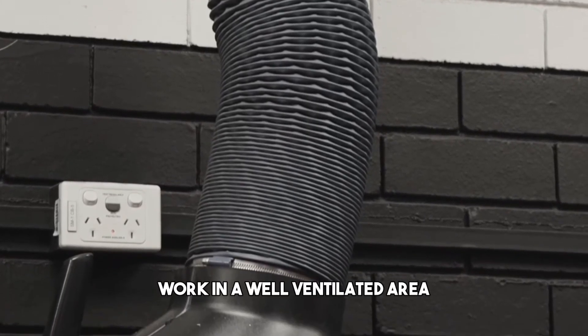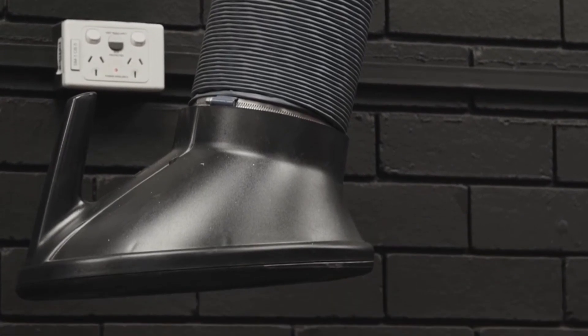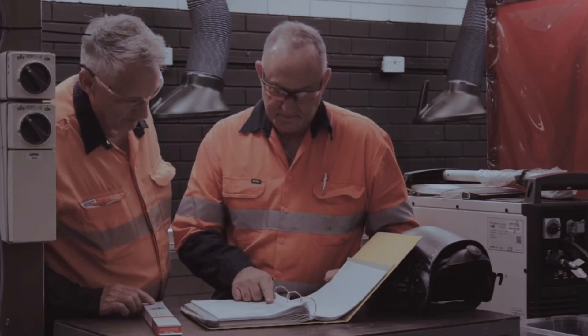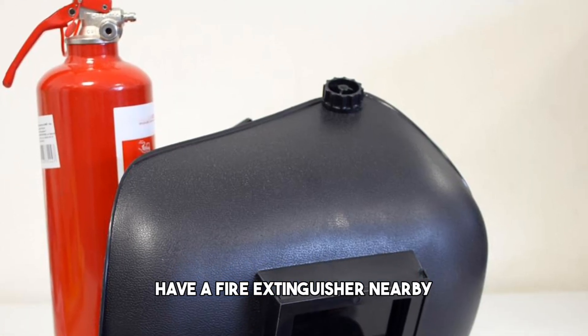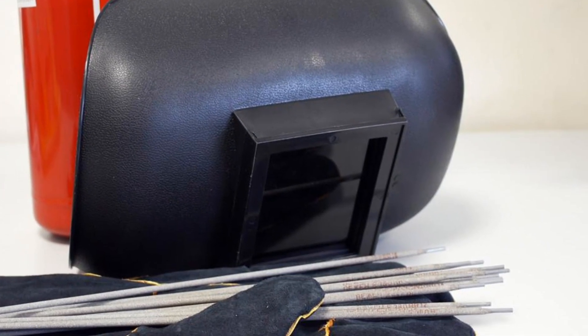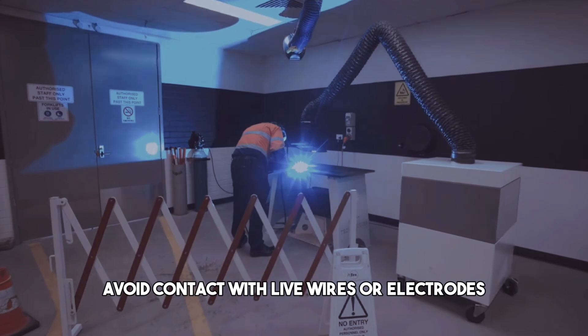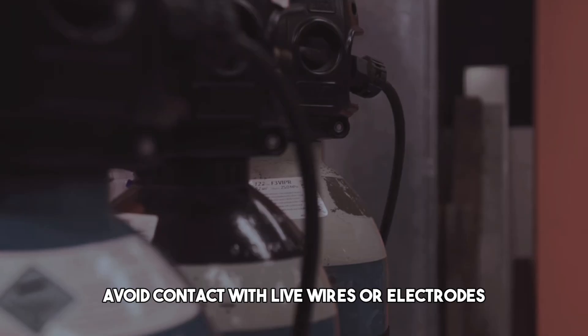Secondly, work in a well-ventilated area by avoiding welding in enclosed spaces or near flammable materials. Have a fire extinguisher nearby and know how to use it. Finally, avoid contact with live wires or electrodes.